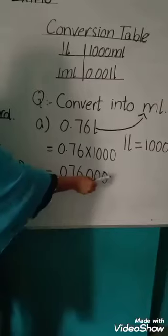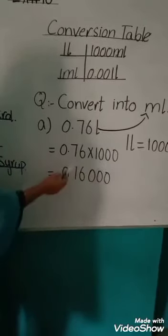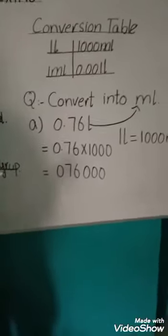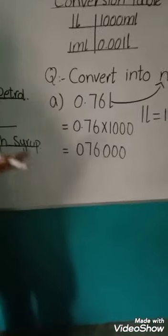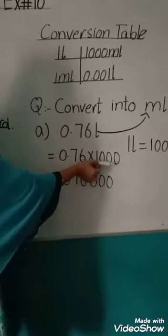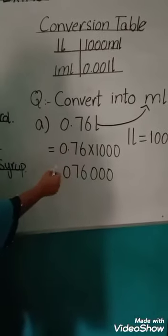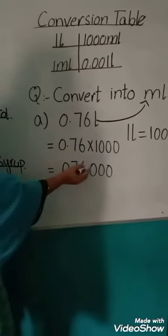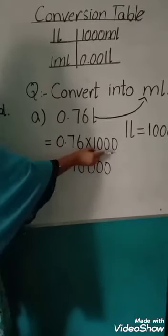So we write 3 zeros on the right side. Now when we move the point, the question is where does the point move? Now, thousands have 3 zeros in multiplication. We move the point to the right side 3 places.